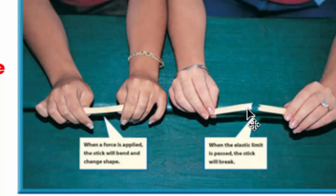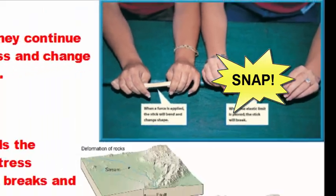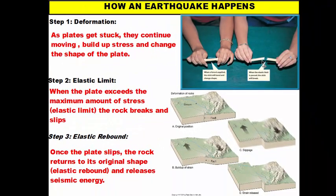When the popsicle stick breaks, it undergoes elastic rebound. When we break it into two, the two pieces are no longer curved — they're flat. They snap back into their original flat shapes and as a result release energy. The energy released is sound energy — that's the snap you hear. Earthquakes work the exact same way.